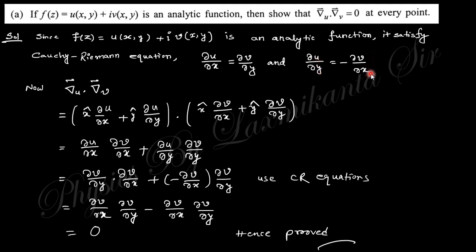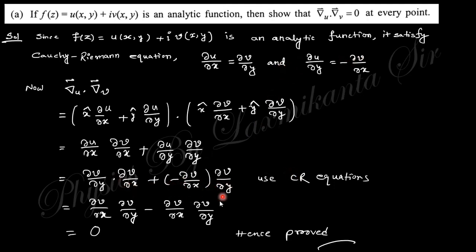Taking the dot product of ∇u and ∇v in two dimensions (since u and v are functions of x and y), with x-cap and y-cap as unit vectors, and using the dot product rule where cross terms vanish, we get: (∂u/∂x)(∂v/∂x) + (∂u/∂y)(∂v/∂y). Applying the Cauchy-Riemann conditions, substituting ∂u/∂x = ∂v/∂y and ∂u/∂y = -∂v/∂x, the two terms cancel out and we get zero. Hence proved.